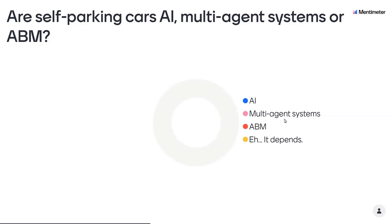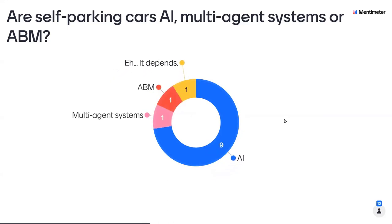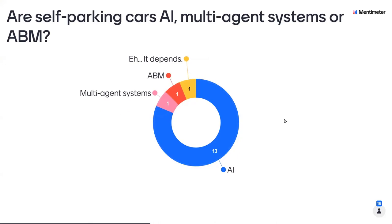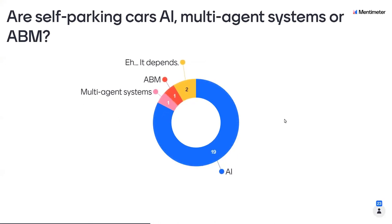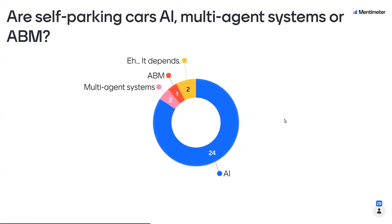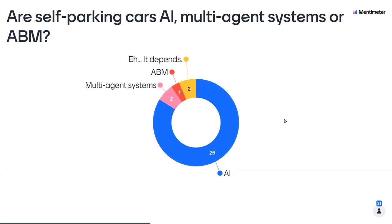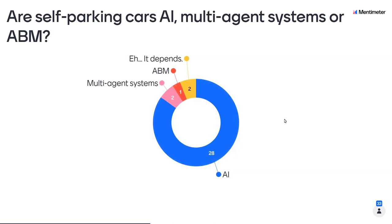Are self-parking cars AI, multi-agent systems, or agent-based models? I'm inclined to think self-parking cars are probably AI. They are using their own cameras, their own sensors, their own internal logic to learn how to park this car in the space they can see. Now, some self-driving cars are multi-agent systems because multiple cars connect and talk to each other about how to best get the entire group moving at a consistent speed. And you certainly could have an agent-based model testing out different kinds of algorithms. But the actual self-parking cars you can get now — those are AI.